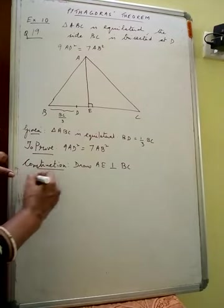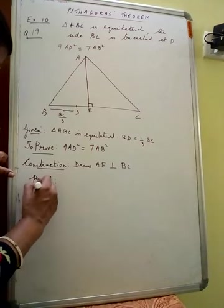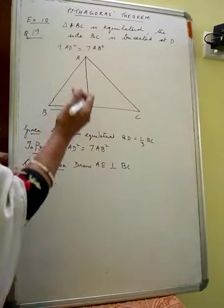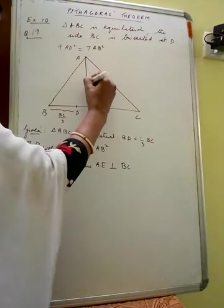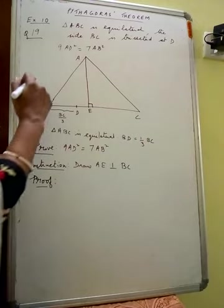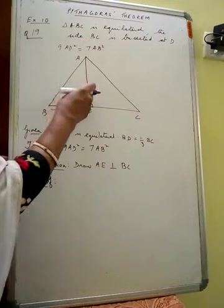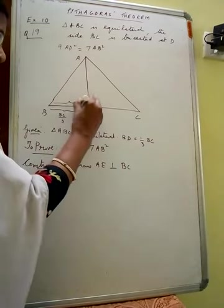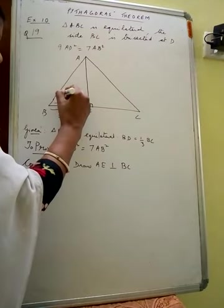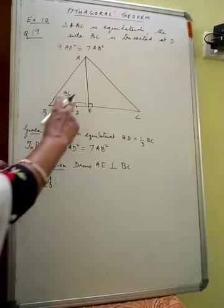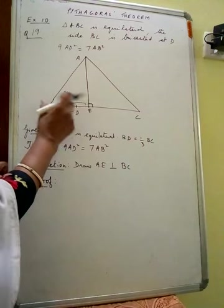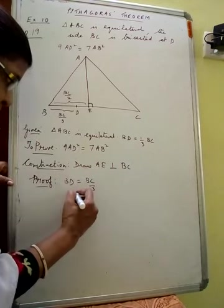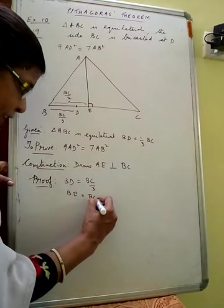Now in the proof, triangle AEB is a right-angle triangle because AE is drawn perpendicular to BC. By the property of an equilateral triangle, the perpendicular drawn from a vertex to the opposite side also bisects the base. So BE = BC/2. We have BD = BC/3 and BE = BC/2.